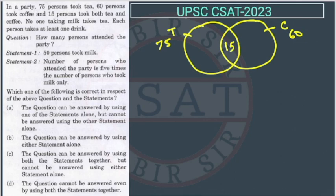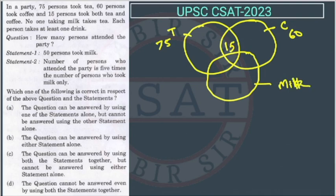No one taking milk takes tea. There are people who are taking milk also, so this is a circle for milk. Since no one taking milk also takes tea, these overlapping regions between milk and tea, and milk-tea-coffee, are both 0 — because no one is taking milk and tea together.